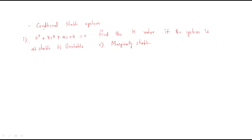Hello everyone. In this session we will discuss the conditional stable system — what conditions are required for a system to be stable, and how we can analyze them. To understand this clearly, consider the problem: s³ + 8s² + 4s + k = 0. Given this characteristic equation, find the value of k if (A) the system is stable, (B) the system is unstable, and (C) the system is marginally stable.